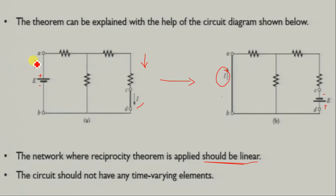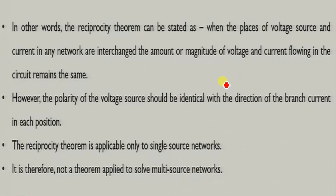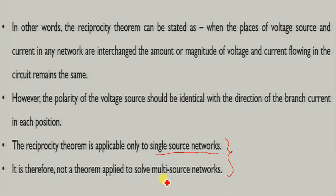We can see the current direction here — downward here, upward direction there. An important condition is that the reciprocity theorem is only applicable to a single-source network. When we have one voltage source or one current source, then we can use the reciprocity theorem. In the case of multiple sources, we cannot use the reciprocity theorem.